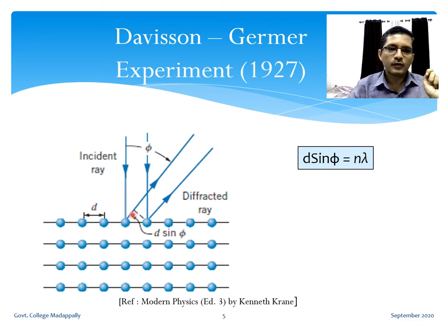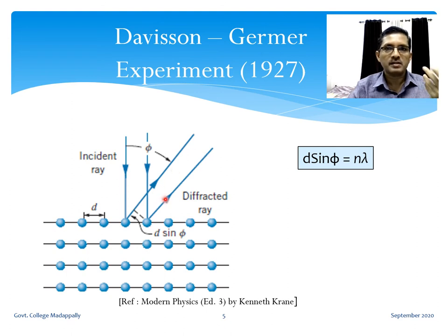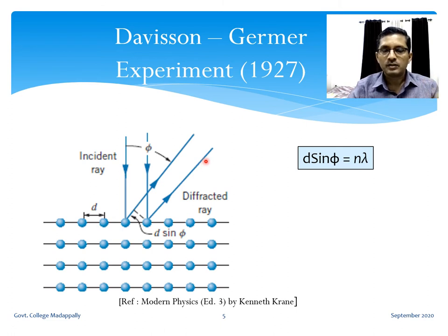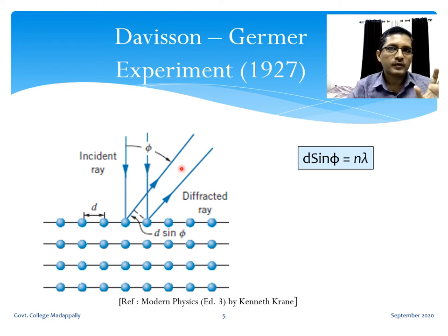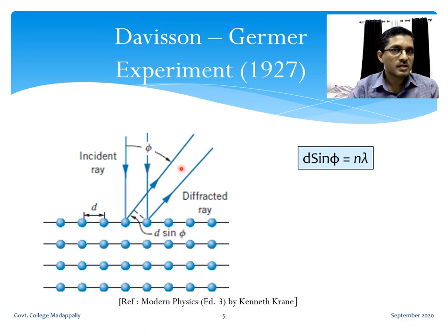This path difference d sin φ must be an integral multiple of λ for constructive interference between these two beams. If the path difference is an integral multiple of λ, there will be constructive interference and we get a maximum intensity. So the condition for maximum intensity of the electron beam scattered from the surface layer only is d sin φ = nλ.